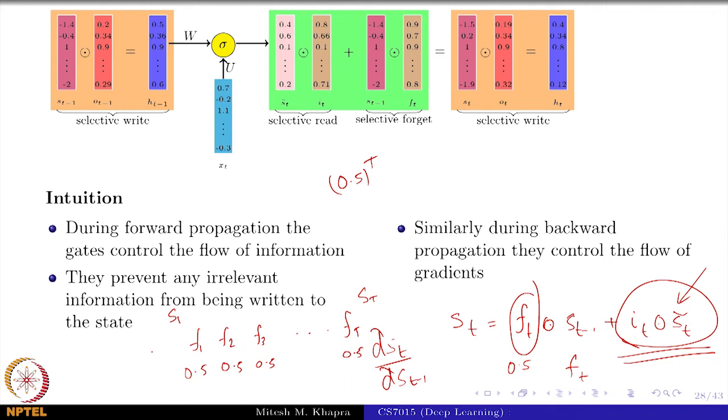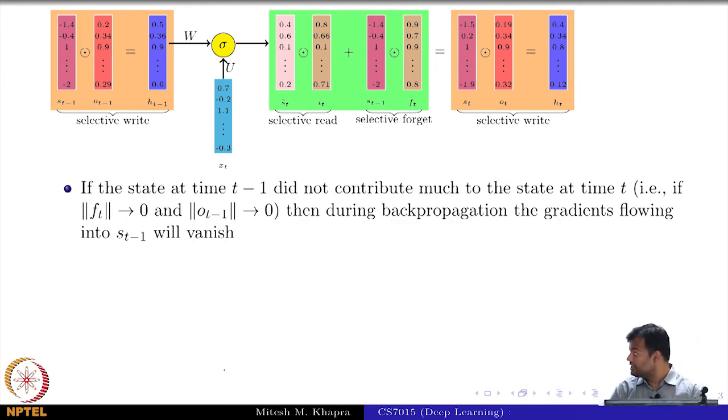So in the forward pass, if S_1 did not contribute to S_T, in the backward pass should I make it responsible for the crimes of S_T? No. So what is happening in the backward pass? Again the gradients are getting regulated by the same forget gates. So again in the backward pass, you will have a situation that by the time the gradient reaches S_1, it would be 0.5 raised to T and that is fine, it is going to vanish. But that is okay because even in the forward pass it had vanished. So let it vanish in the backward pass also. This kind of vanishing is okay.